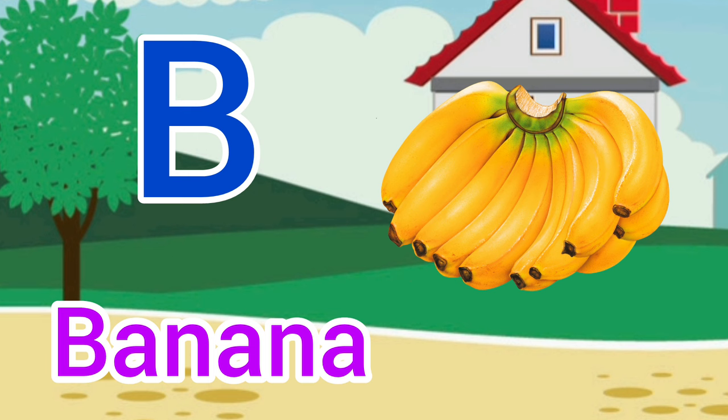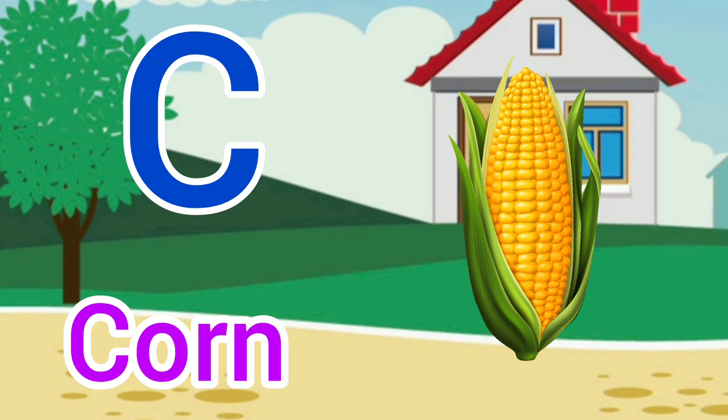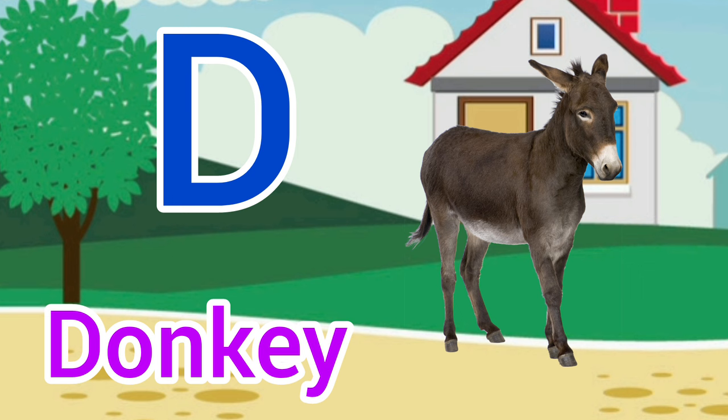C for corn, corn means makka. D for donkey, donkey means gada.